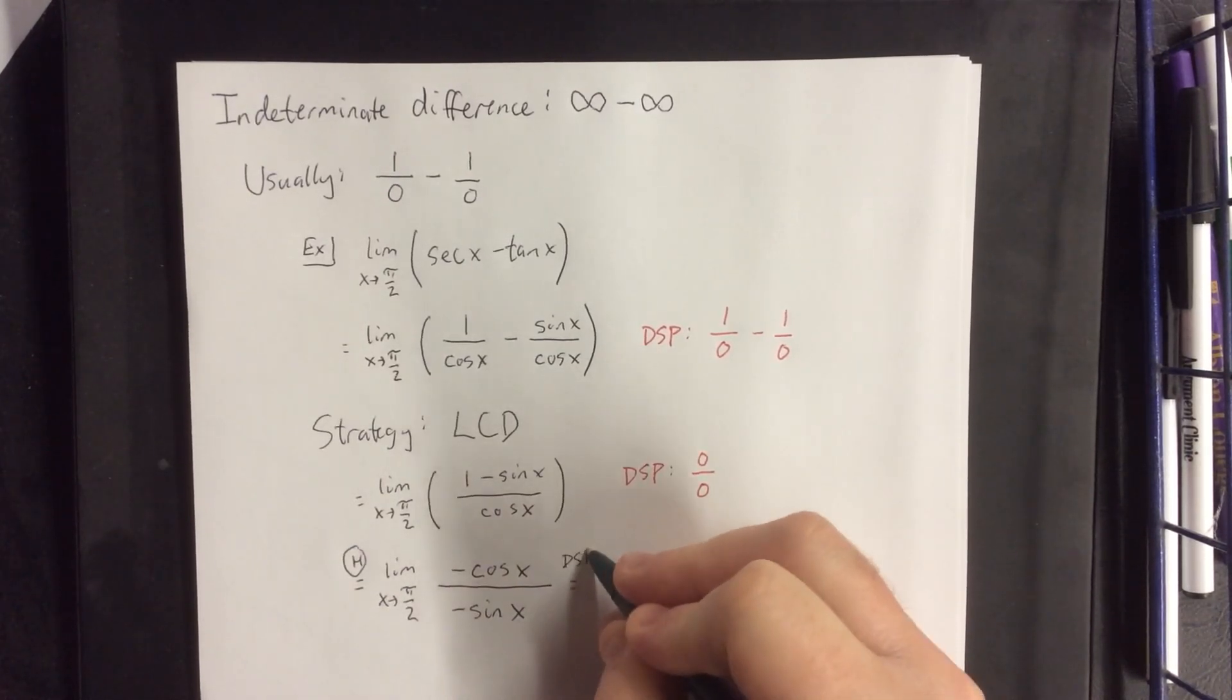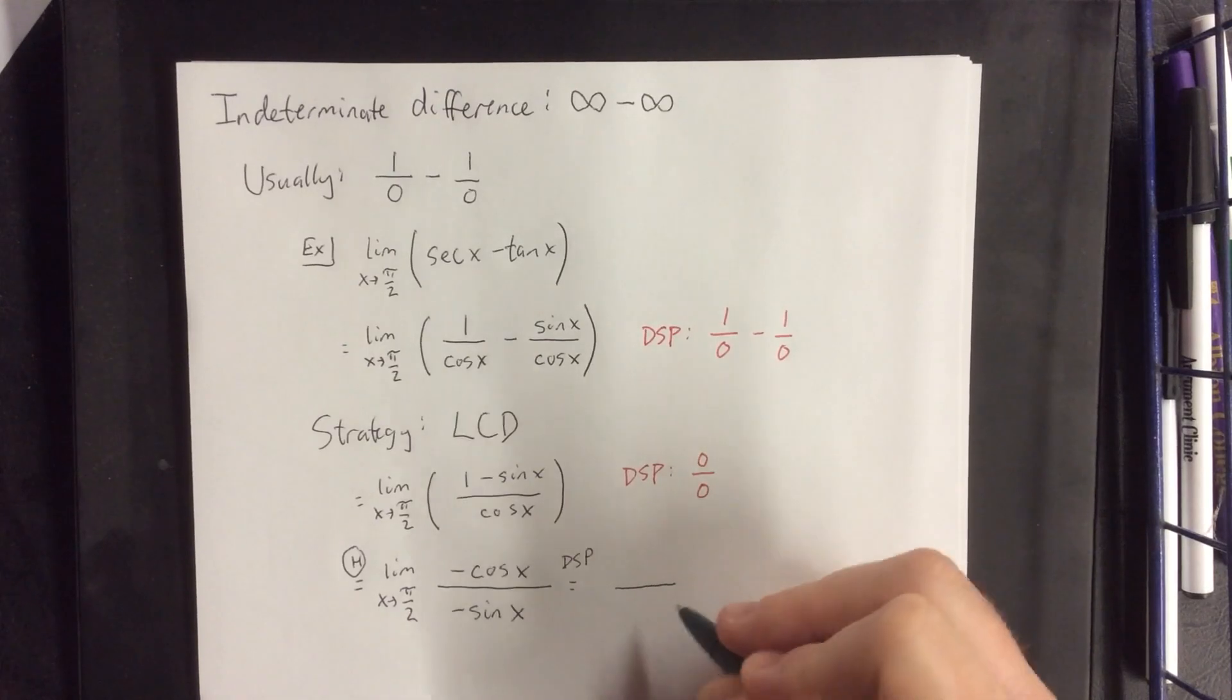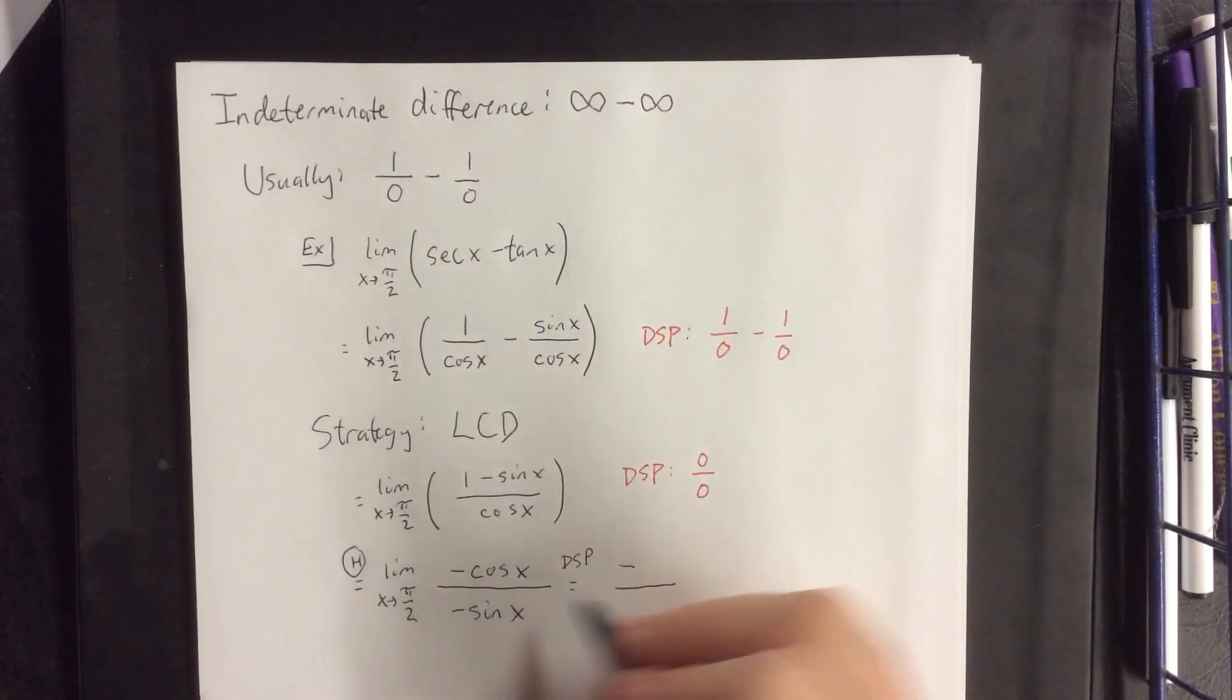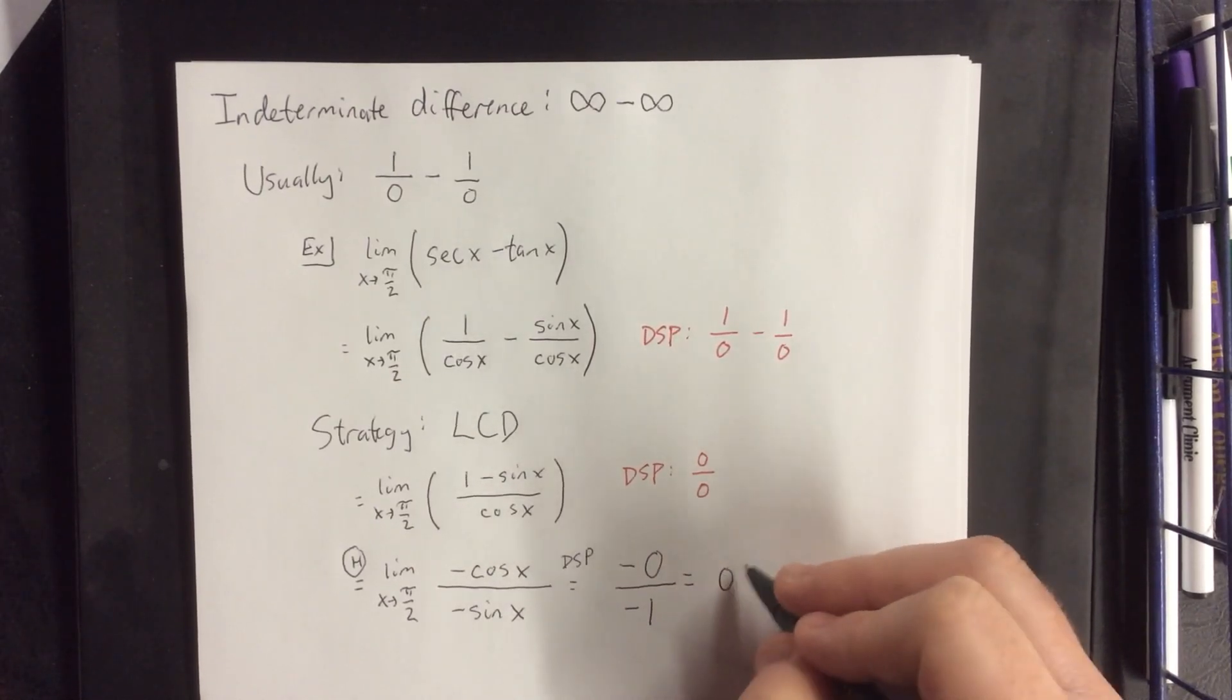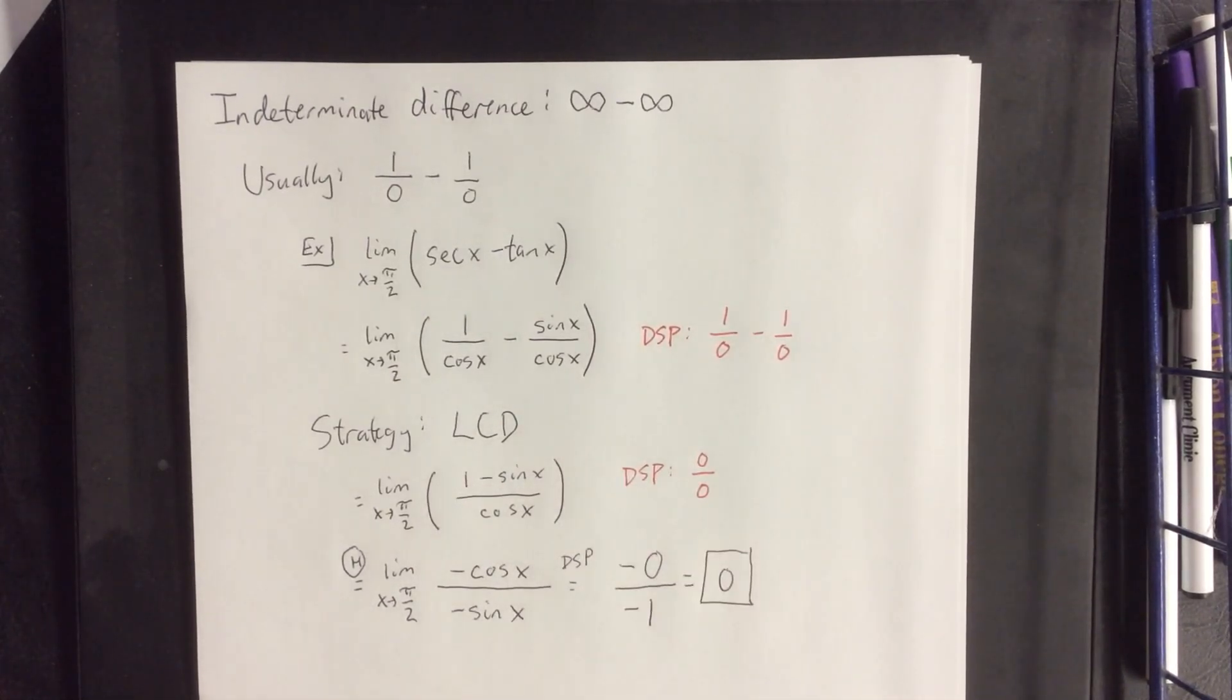If, at this point, you attempt to use the direct substitution property, your numerator is going to be negative cosine of pi over 2 is 0, and the sine of pi over 2 is negative 1. Final answer for this one would be 0.